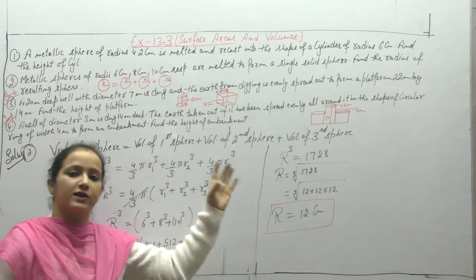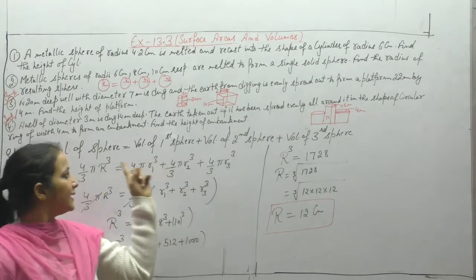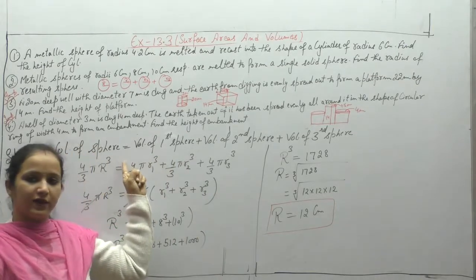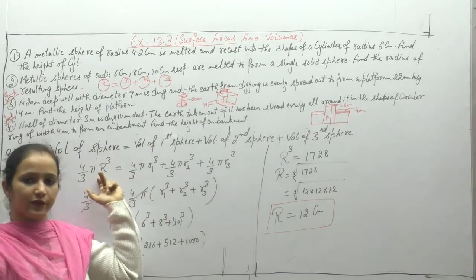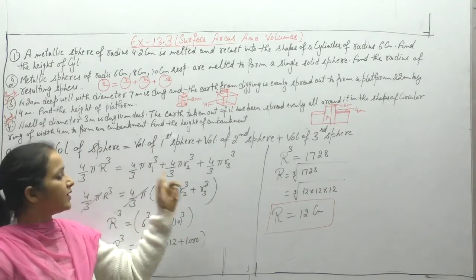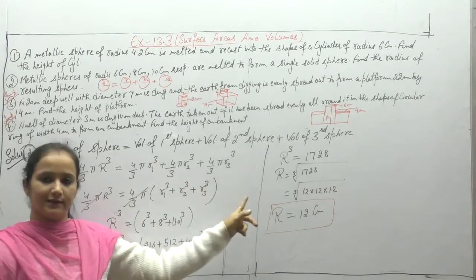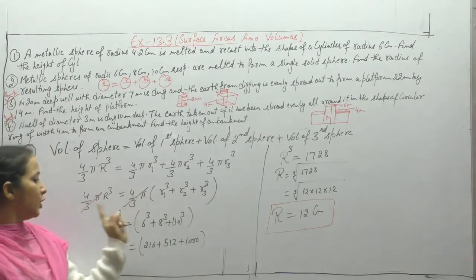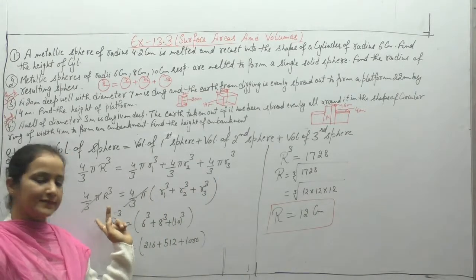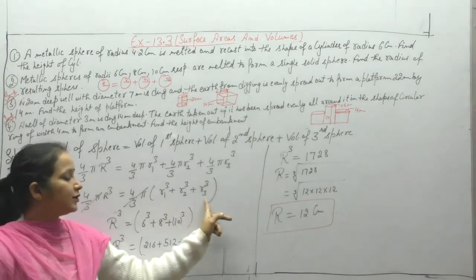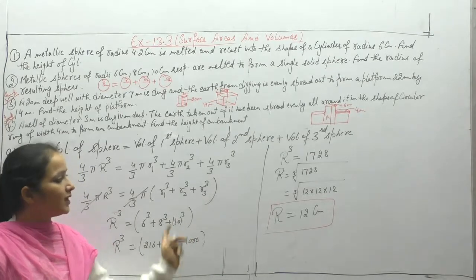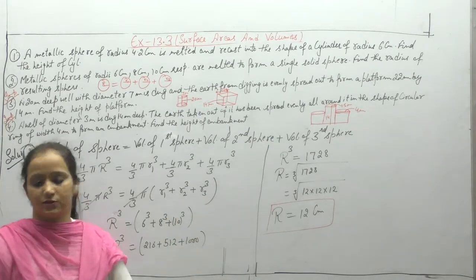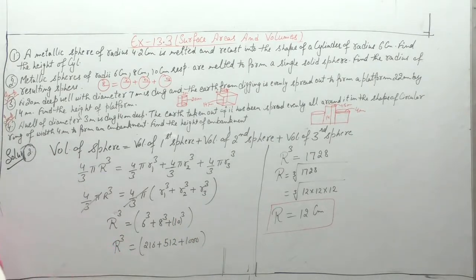Summary: three spheres are melted to form one bigger sphere, so volume of the resulting sphere equals sum of volumes of the first, second, and third spheres. The (4/3)π cancels, radii are given, put the values and solve. Moving to the next question.